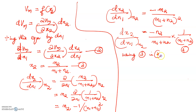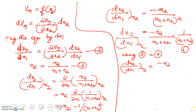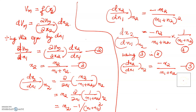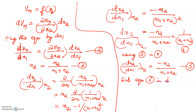Using equation 3 in equation 4, we get: dx₂/dn₁ at constant n₂ is equal to minus x₂ into 1 by (n₁ + n₂), which is minus x₂ divided by (n₁ + n₂). Let this be equation number 5. Once we have equation 5, it can be used in equation 2, which also has dx₂/dn₁. So substituting equation 5 in equation 2 — let's do it in the next slide.